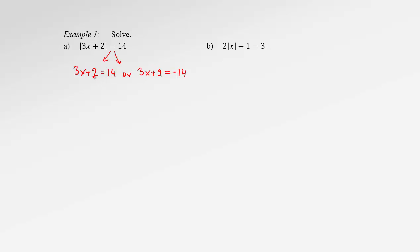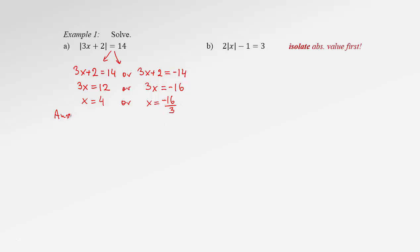Let's solve it. We subtract 2 to the other side, getting 3x equals 12. Similarly, after subtracting 2 to the other side, we have 3x equals negative 16. In the second step, we divide both equations by 3 and obtain x equals 12 divided by 3, which is 4, or x equals negative 16 divided by 3, which is negative 16 thirds. It's okay to have a fractional number here. So the solution set for the above equation consists of 4 and negative 16 thirds.